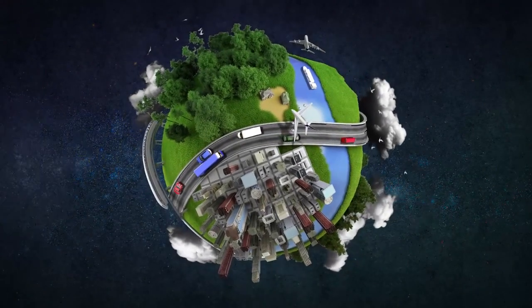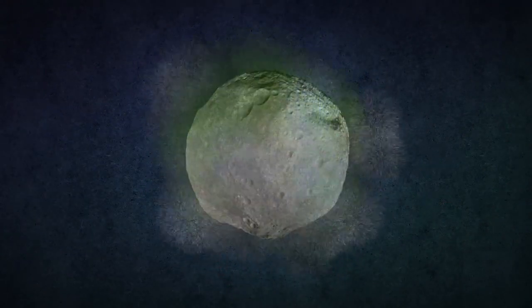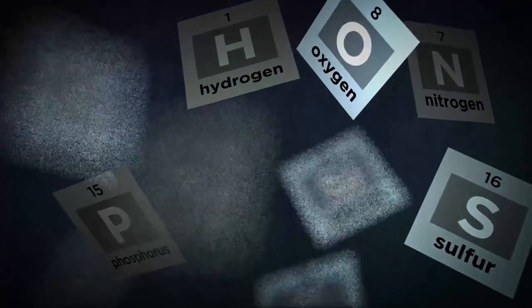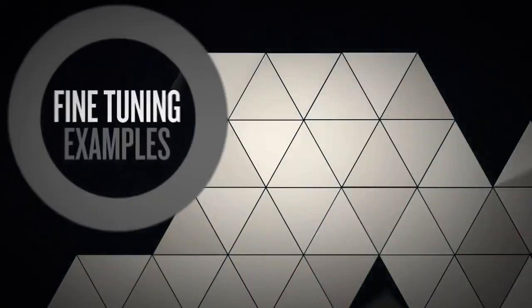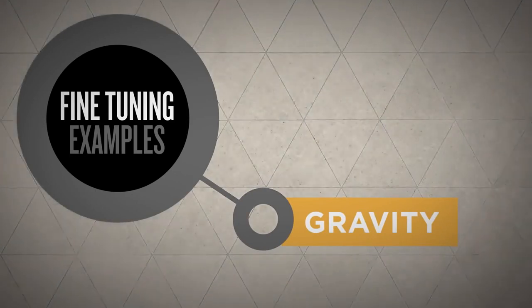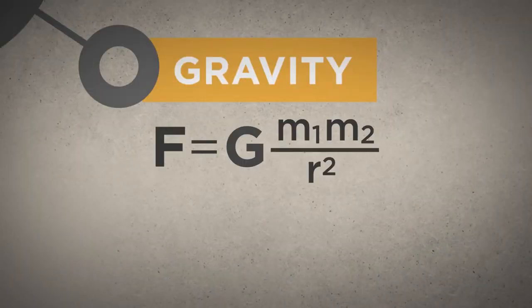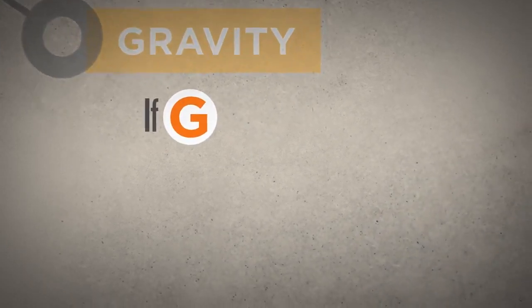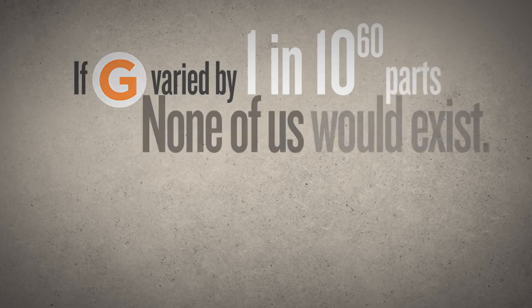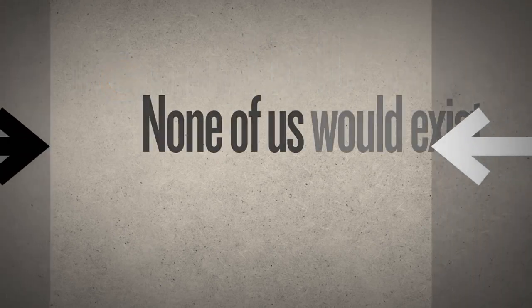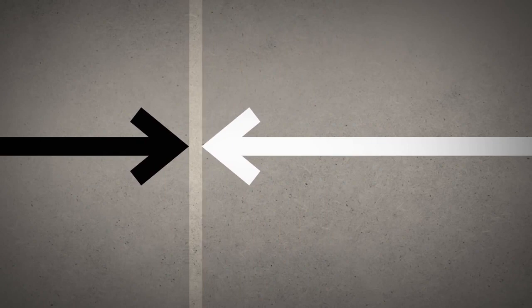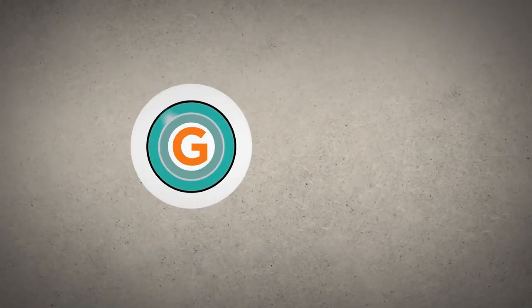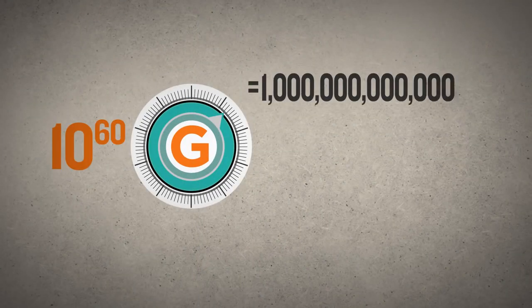There'd be no stars, no life, no planets, no chemistry. Consider gravity, for example. The force of gravity is determined by the gravitational constant. If this constant varied by just 1 in 10 to the 60th parts, none of us would exist. To understand how exceedingly narrow this life-permitting range is, imagine a dial divided into 10 to the 60th increments.